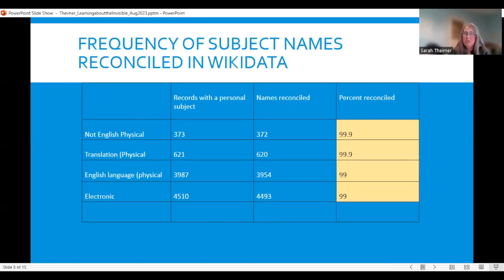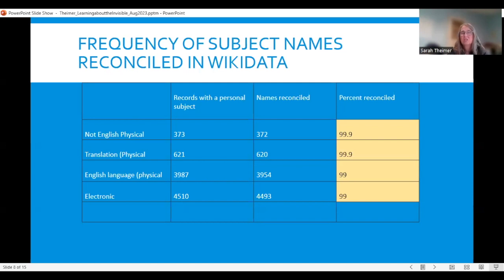As for subject names, those were pretty consistent across the board — all at 99%. An overwhelming number of subject names were reconciled, which makes sense: if somebody wrote a published monograph about a person, that person likely has a record in Wikidata. If we went in manually, we might find the Wikidata record for that remaining fraction of a percent.